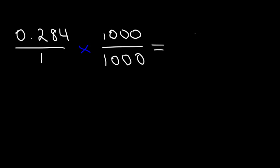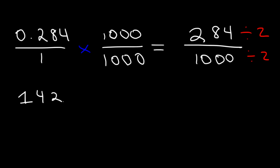0.284 times 1,000 is 284. And 1 times 1,000 is simply 1,000. Now, both numbers are even, so we can divide by 2. Half of 2 is 1, half of 8 is 4, half of 4 is 2. Half of 1,000 is 500.